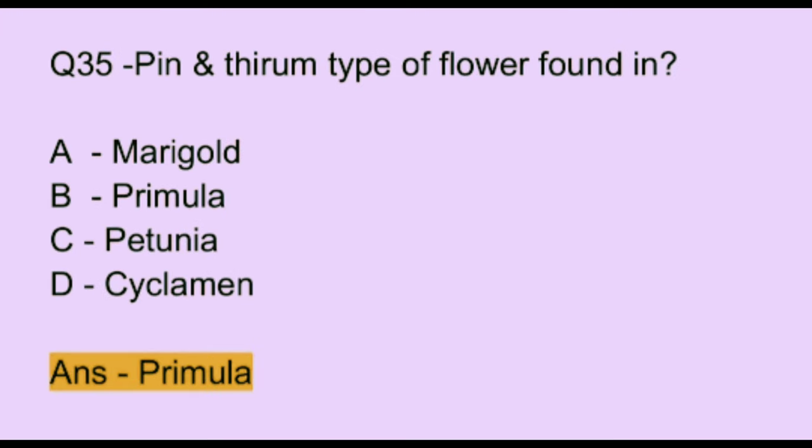Question number 35. Pin and thrum type of flower is found in: Option A: marigold. Option B: primula. Option C: petunia. Option D: cyclamen. The correct answer is option B, which is primula.